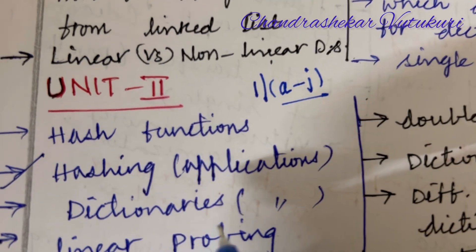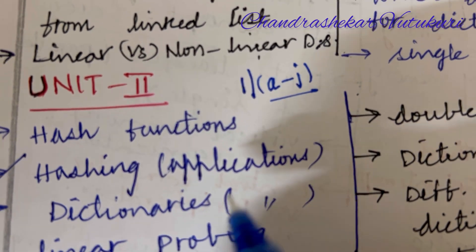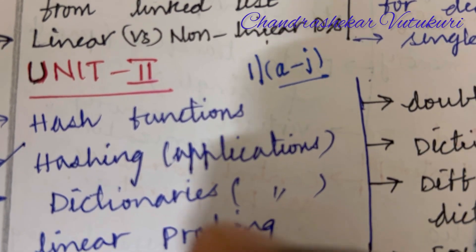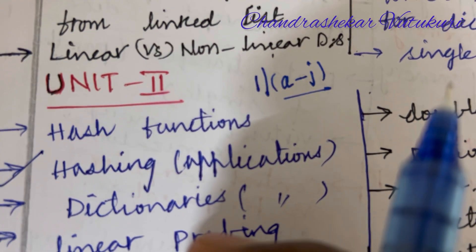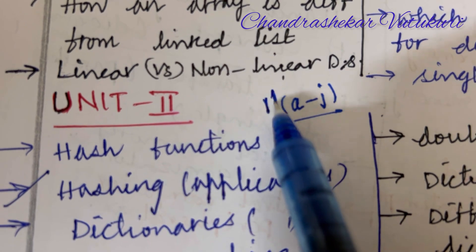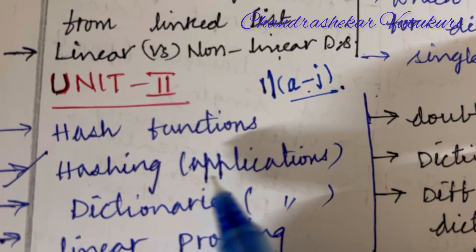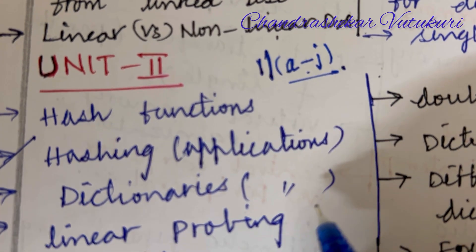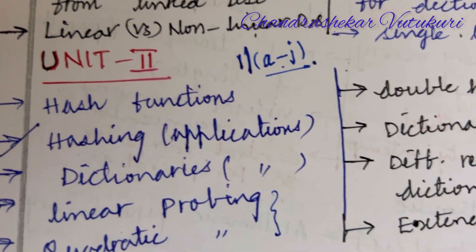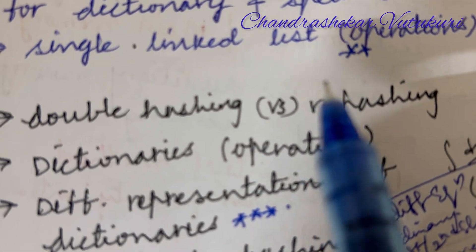I hope you are taking your exams neatly, carrying two sets of pens, drawing a margin after each answer, and writing all short questions together and long questions together. For Unit 2, you'll be getting 10 marks. Important topics include: hash functions, hashing applications, dictionary applications, linear probing, and quadratic probing. We can expect these questions in the form of long or short — prepare well and score better marks.